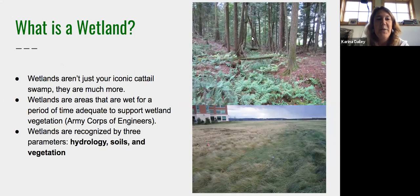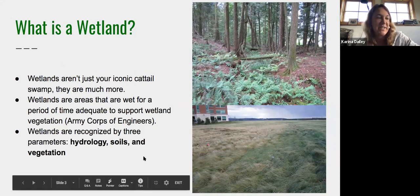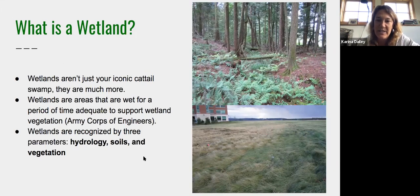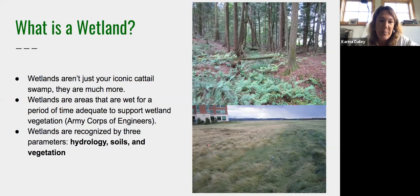A lot of people think of wetlands as the iconic cattail swamp, but in Vermont there are so many wetlands that are much more than that. It's truly those wetlands that have been farmed for a long time that become the cattail swamp. The forested wetlands, floodplain wetlands, hardwood swamps — those really define Vermont's wetlands, much less so the cattail swamp.